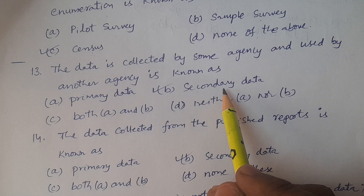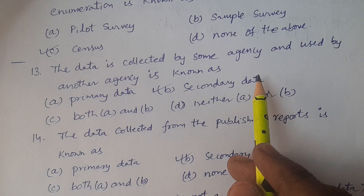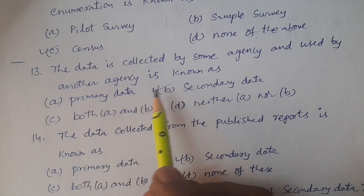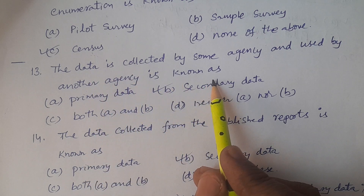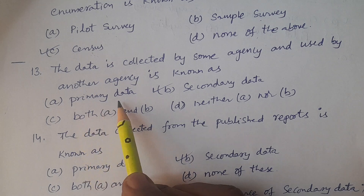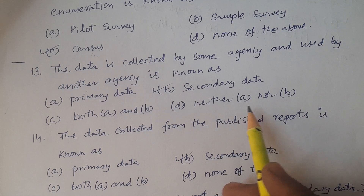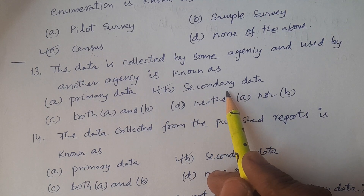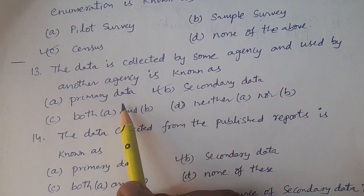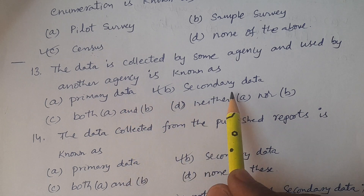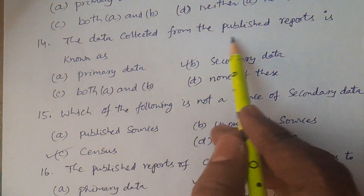Secondary data is when one agency collects the data and another agency uses it. Such kind of data is known as secondary data. The answer is secondary data.